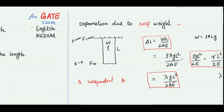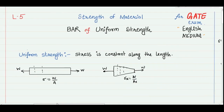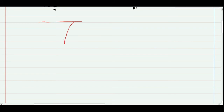Since stress varies from the tip to the root in a bar under self-weight, we can use this concept to design a bar with constant stress throughout its length. By varying the cross-section area appropriately, we can achieve constant stress. This is our target: to derive the relation for the cross-section of a bar of uniform strength.